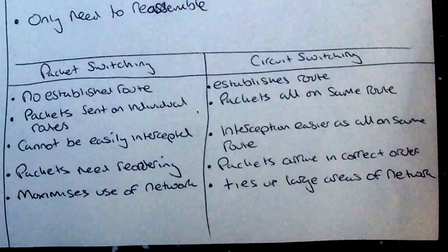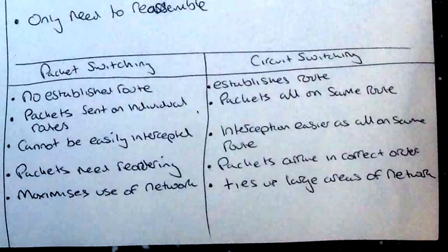So if we look at the next to each other, packet switching has no established route. The packets can go any way. Whereas circuit switching has established route. Packet switching, the packets are sent on individual routes. So everyone will go in a different direction, essentially. Whereas in circuit switching, all the packets will go in the same direction.